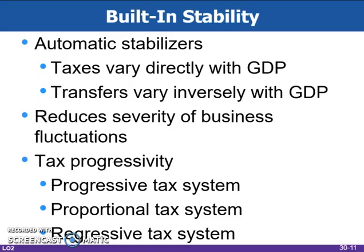Built-in stability arises because net taxes change with GDP. Remember that taxes reduce incomes and therefore reduce spending. It is desirable for spending to rise when the economy is slumping and vice versa when the economy is becoming inflationary. Automatic stability reduces instability, but does not eliminate economic instability.